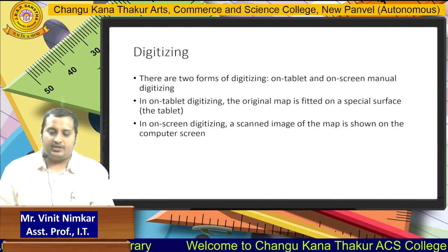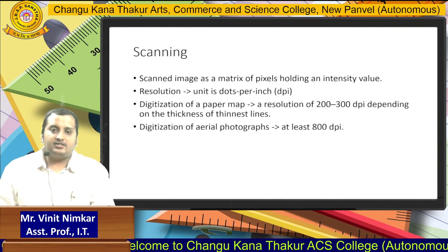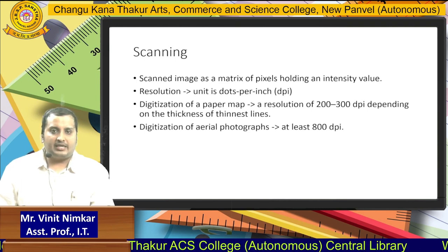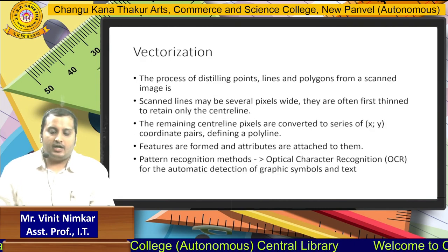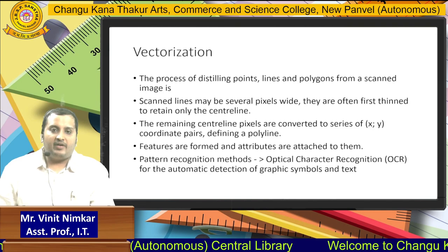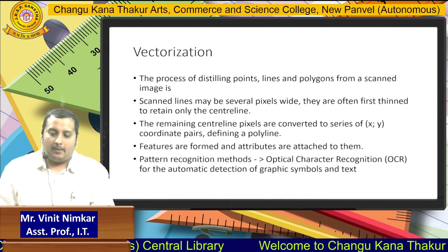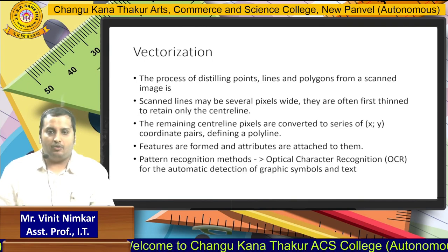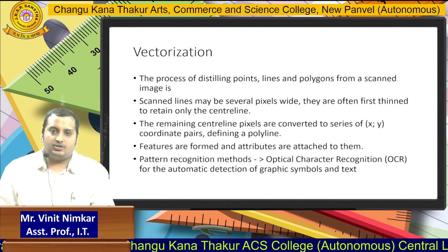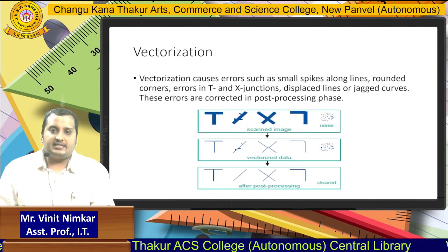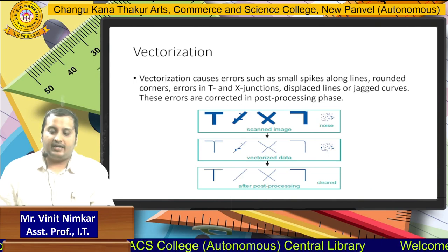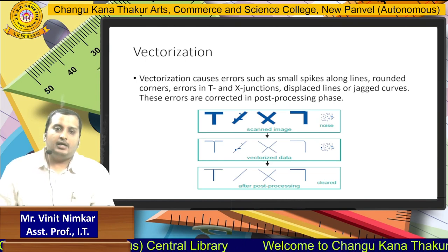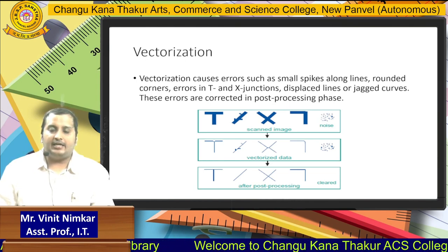We can scan this map for its outlines and boundaries. Scanning is a process where we make use of different kinds of scanners to scan those ready-made paper maps. The third process is vectorization. In vectorization, the image is scanned but only specific points, lines, and polygons are extracted from the paper maps. The rest of the parts not required are avoided. As we can see, there is a scanned image next to which we can see different kinds of noise which appear during scanning.